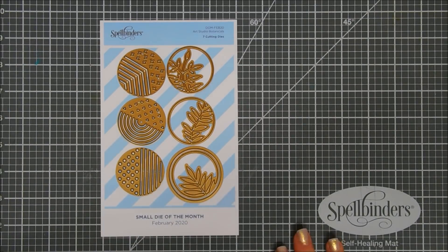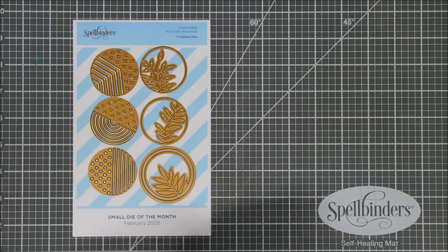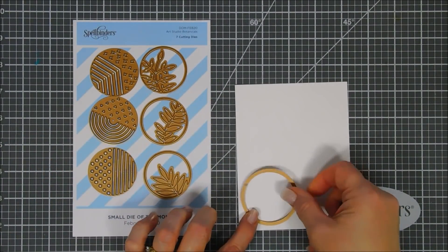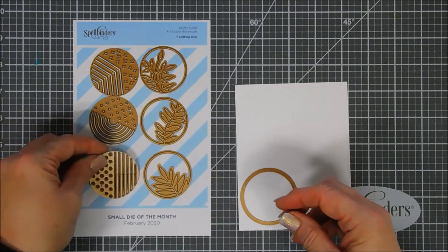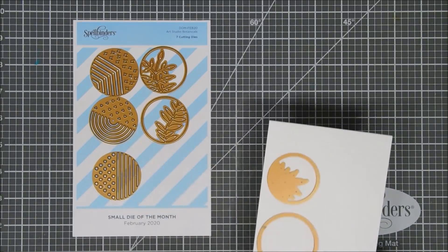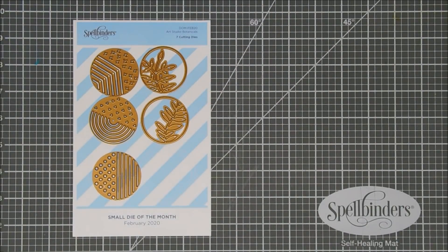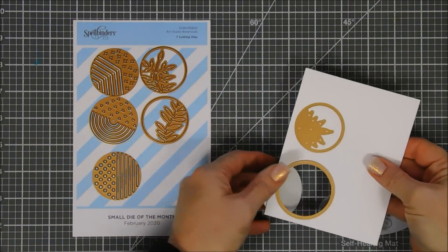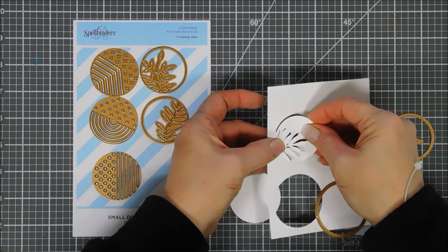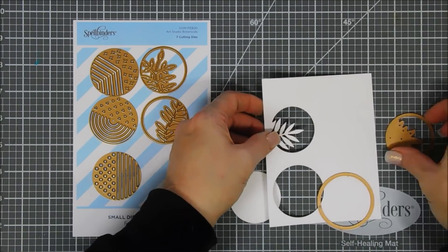It's for February 2020 and it is so neat. It's called Art Studio Botanicals. It's a seven piece die set. You get the circle die here and then each one of these six circles will fit on the inside of that larger circle but it also creates a window. If you do it separately it will create a window inside your panel. I like that there's botanicals and there's an artsy side to them and you get three of each set.